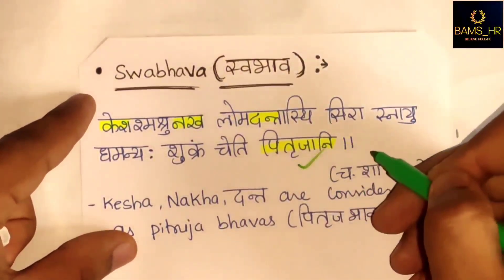Now, Kesha Gata Rogas. In Ayurveda, in the context of Ashtanindita Purusha, there is a description of Atiloma and Aloma under Medo Dhatu Vikrutihi. First is Khalithya - falling of hairs - caused by Vata and Pitta in Roma Koopa. The closing of Roma Chidra due to Rakta and Kapha is called Indralupta. The key difference: Khalithya is hair fall, while Indralupta is total baldness.